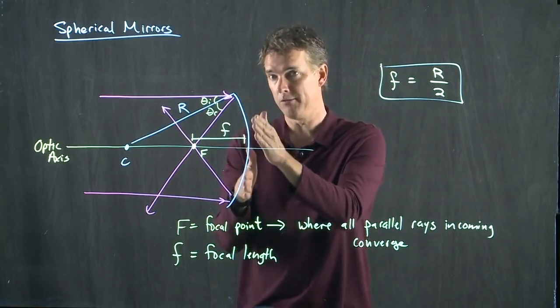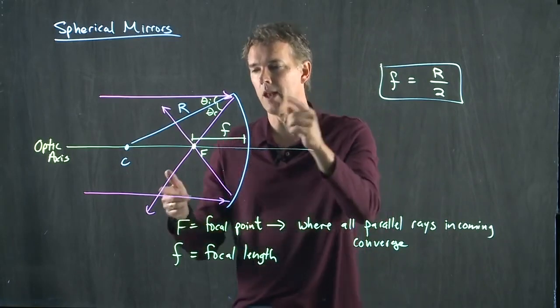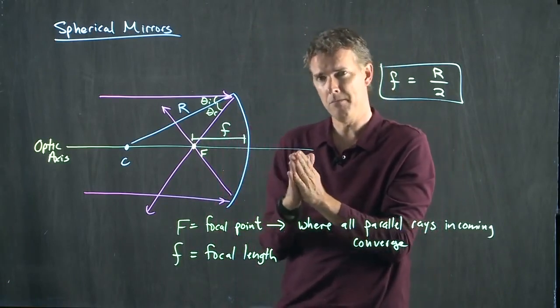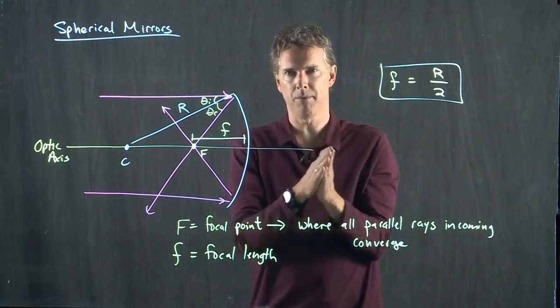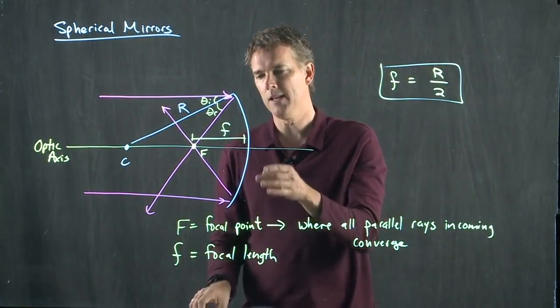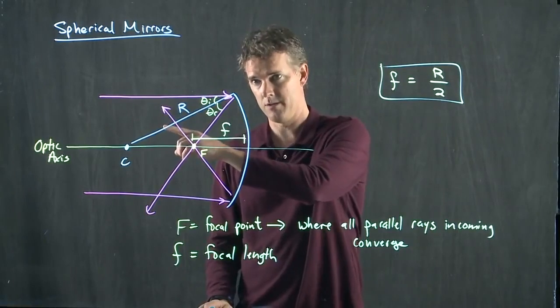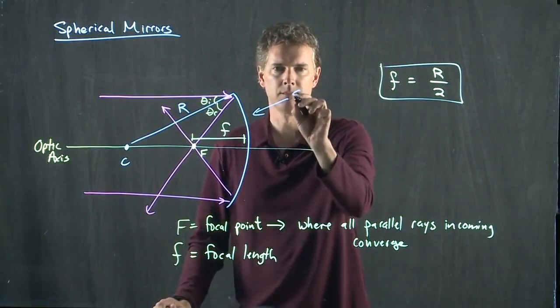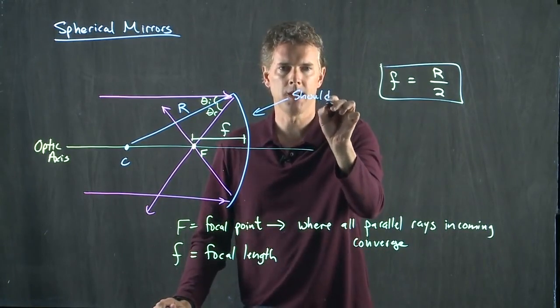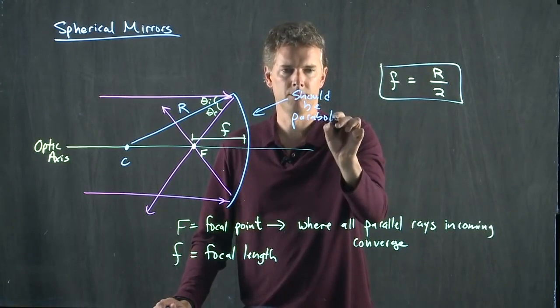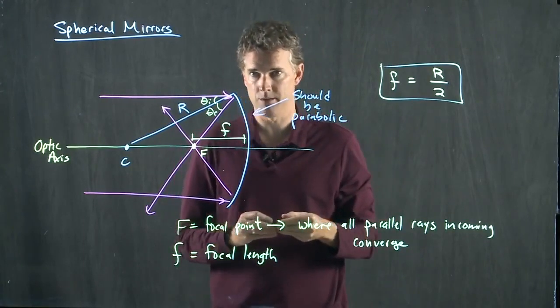If the mirror behaves really well, then all those rays will converge at that point. But if the mirror is not quite perfect, if the mirror, in fact, is made from a sphere, not a parabola, then it suffers from something called spherical aberration.